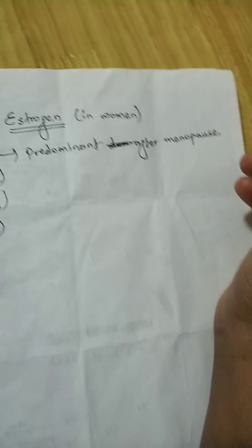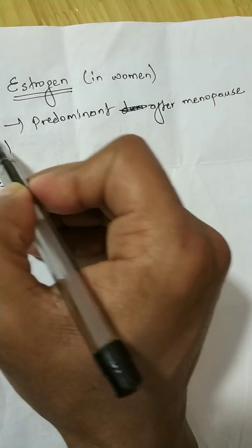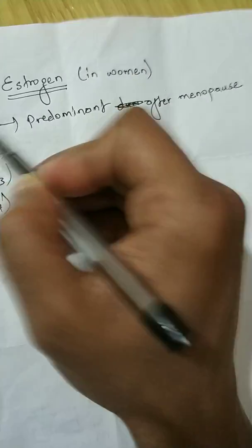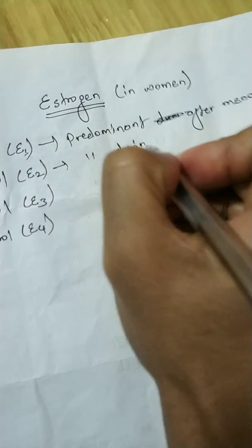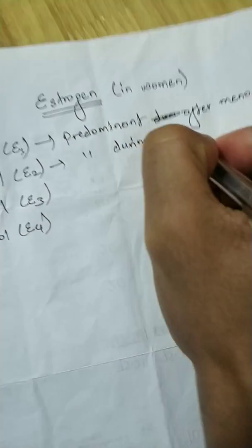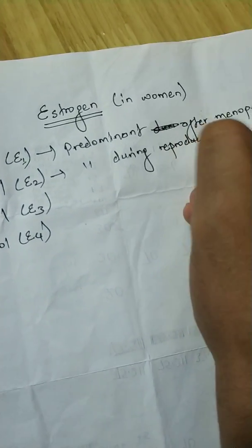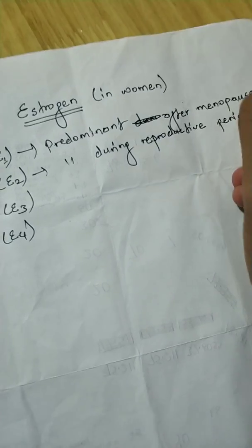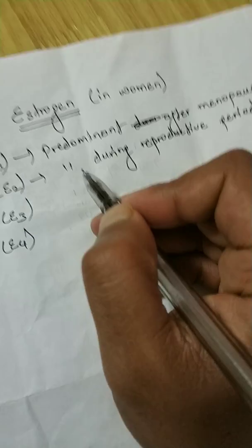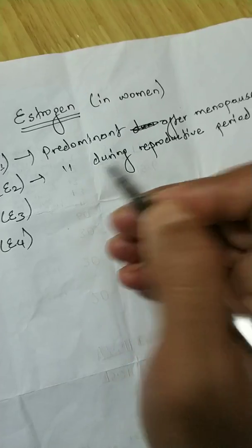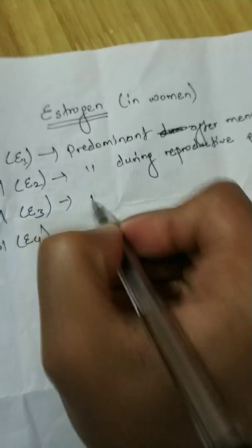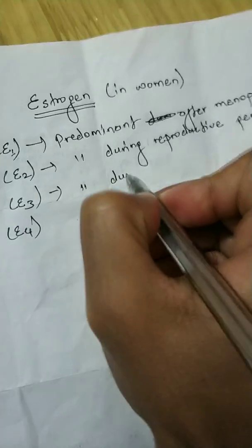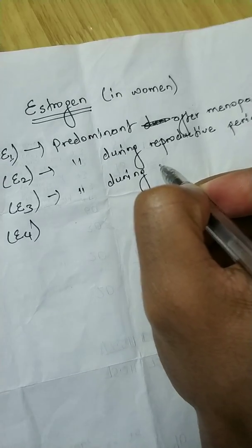So estrone is predominant after menopause. We can remember: first into last — estrone E1 and menopause — this one is predominant after menopause. E2 is predominant during the reproductive period, that is after the starting of menarche till menopause.